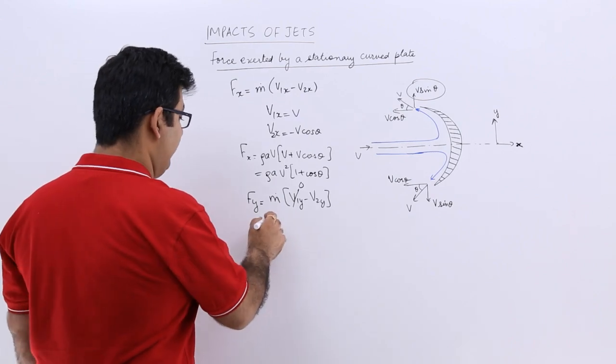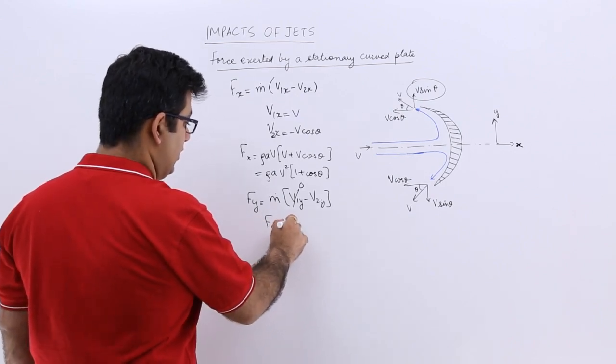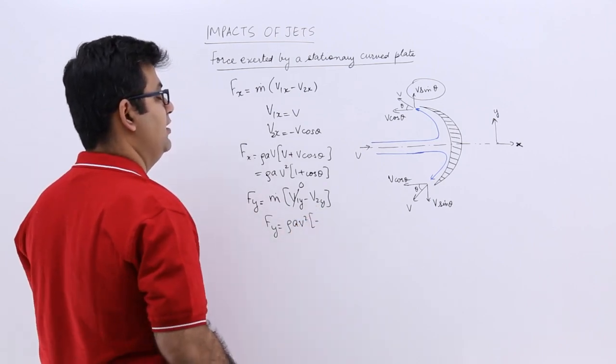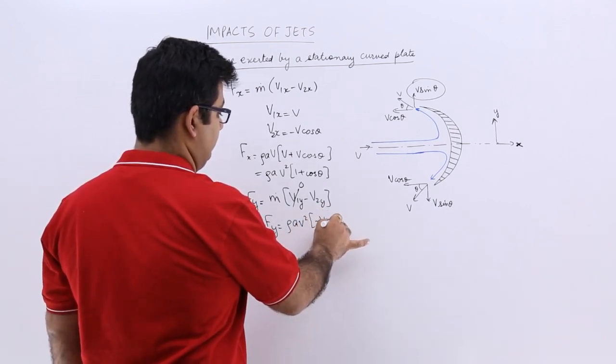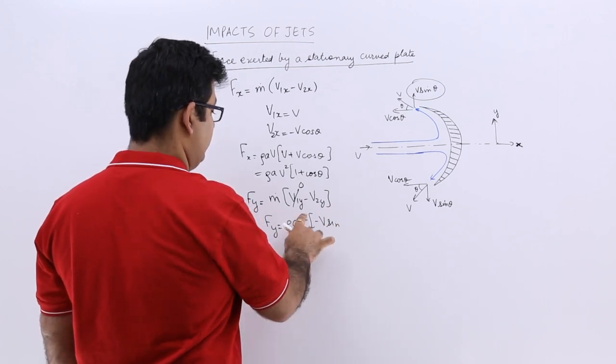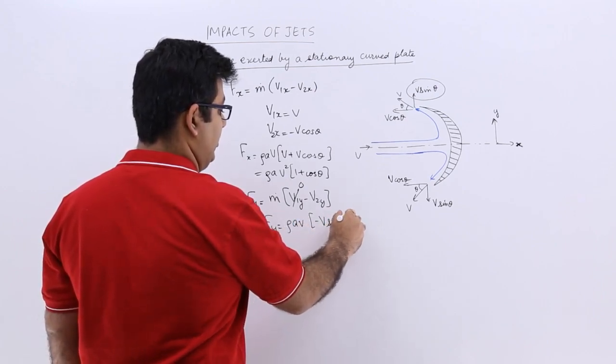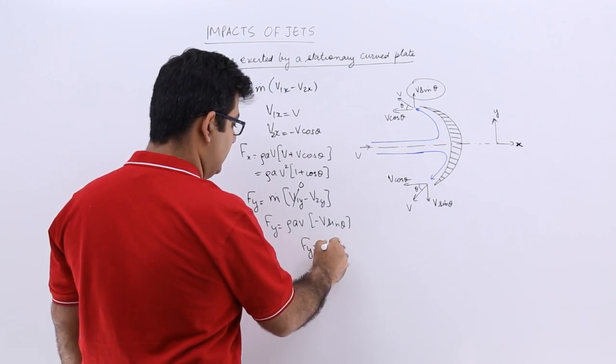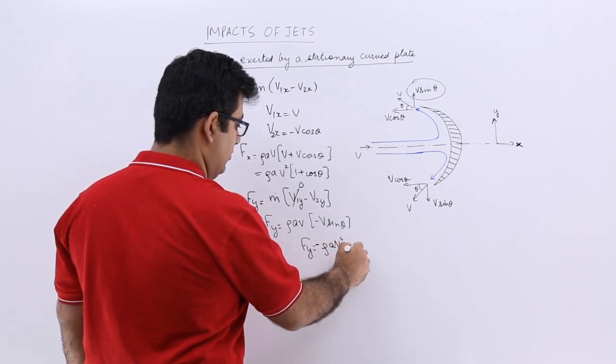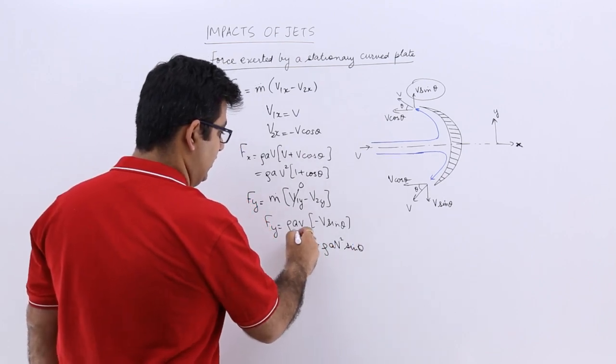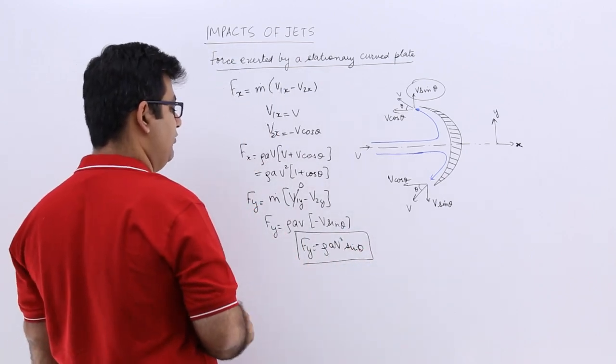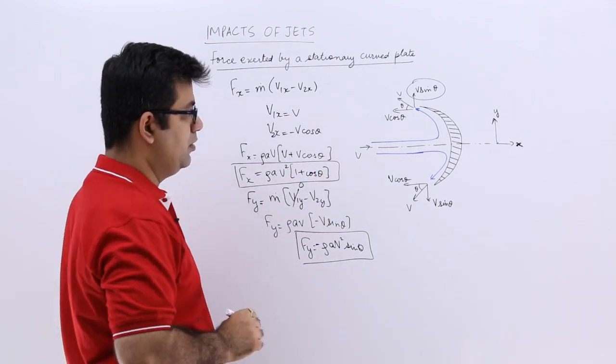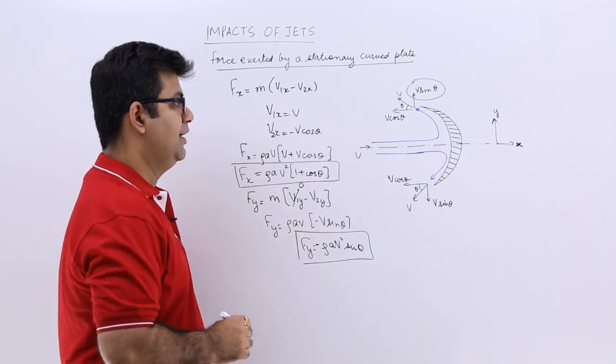So you will have ρAv into minus v sin theta. And Fy would then eventually become minus ρAv² sin theta. So this is the relation for Fy and this would be the relation for Fx. So it is a very simple analysis.